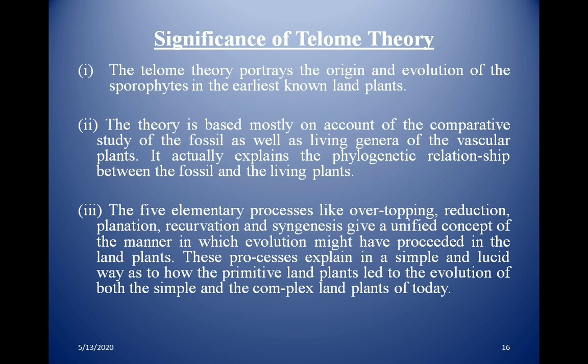This theory is based mostly on comparative study of fossil as well as living genera of vascular plants. It actually explains the phylogenetic relationship between fossil and living plants. The five elementary processes — overtopping, reduction, planation, recurvation, and syngenesis — give a unified concept of the manner in which evolution might have proceeded in land plants, explaining in a simple and lucid way how primitive land plants led to the evolution of both simple and complex land plants of today.